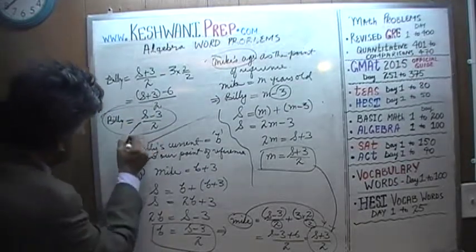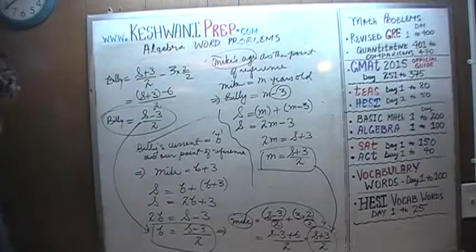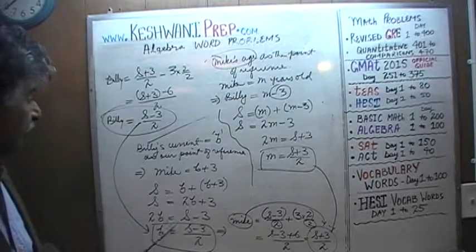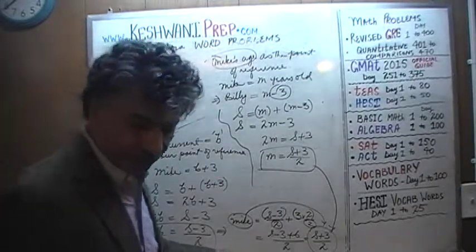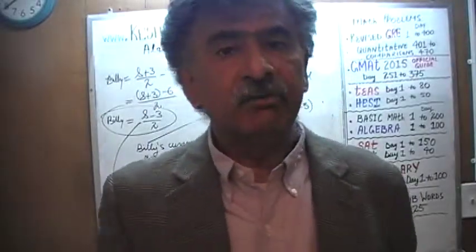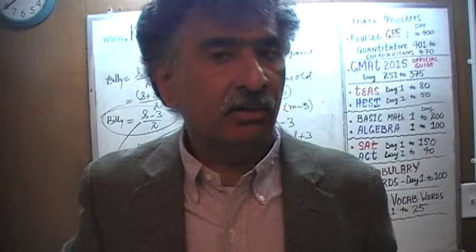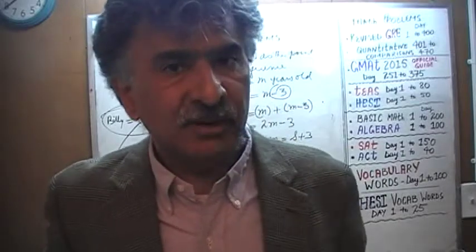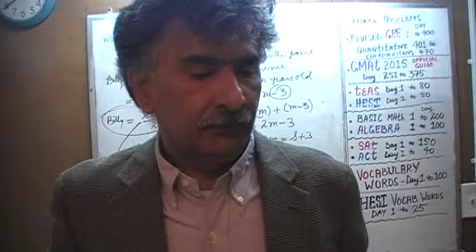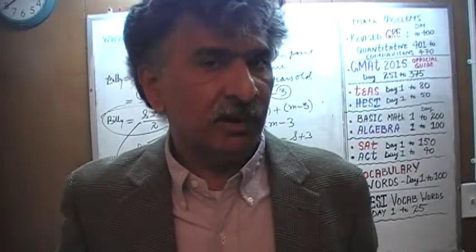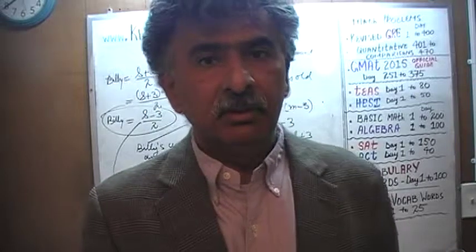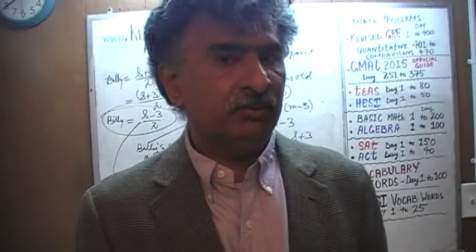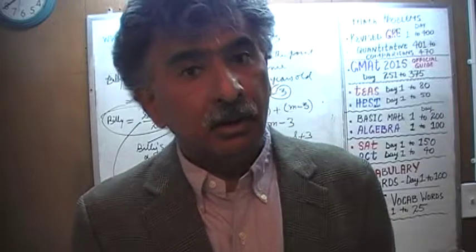That's exactly what we found before for Billy's age — s minus three over two. The point is that it really doesn't matter how you solve the problem, as long as your logic is correct and your thinking is systematic, you'll always get the same answer. Just because there are five different ways of solving a problem doesn't mean there are five different answers — at most one can be correct.